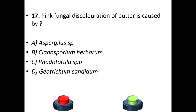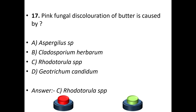Seventeenth question: pink fungal discoloration of butter is caused by A: Aspergillus species. B: Cladosporium herbarum. C: Rhodotorula species. D: Geotrichum candidum. The answer is C — Rhodotorula species.